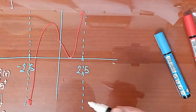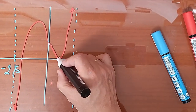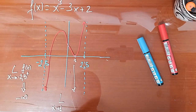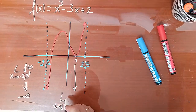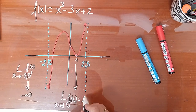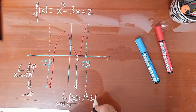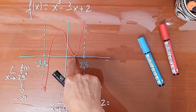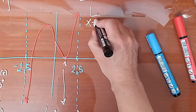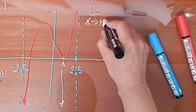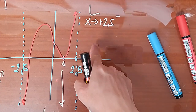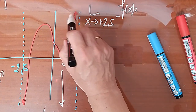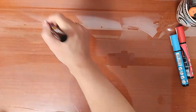¿Qué ocurriría si la función tendiera a 1? Es decir, realizo el límite cuando x tiende a 1. Tanto por la derecha como por la izquierda siempre tiende a lo mismo: 1 al cubo menos 3 por 1 más 2, es decir, 1 menos 3 más 2, que sería 0. ¿Y qué ocurriría cuando nos vamos acercando al +2,5 pero por la izquierda, porque por la derecha no está definida la función? Pues en ese caso nos vamos al más infinito.